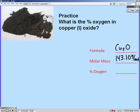To find my percent oxygen, I'm going to say that oxygen is 16 over my 143.10 times 100, gives you 11.18 percent.